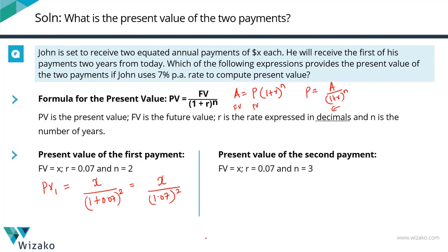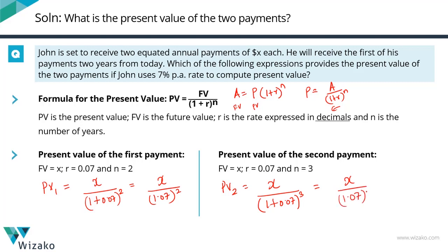For the second payment, it is again for X dollars, the rate of interest is 0.07 per annum expressed as a decimal, and the number of years is equal to 3. So the present value of the second payment equals the future value X divided by (1 + 0.07)³, giving us X upon 1.07 cubed.